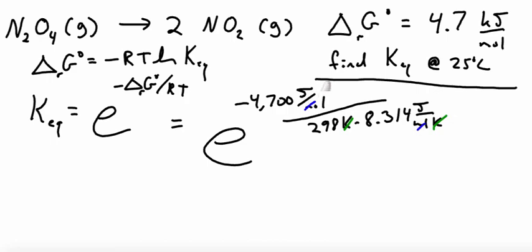So we can see our Kelvins cancel our Kelvins, our moles cancel our moles, and our joules cancel our joules. We have to have this be unitless since we're about to take an exponential. So this comes out to a K equilibrium of 0.15.